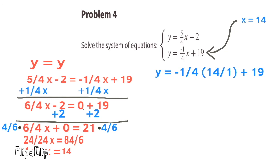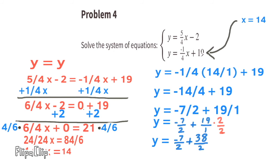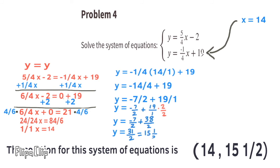Substitute x with 14: y equals negative 1/4 times 14 plus 19, which gives y equals negative 14/4 plus 19. Simplifying, y equals negative 7/2 plus 19/1. Finding common denominators: y equals negative 7/2 plus 38/2, which equals 31/2, or y equals 15 and a half. The solution for this system is (14, 15½).